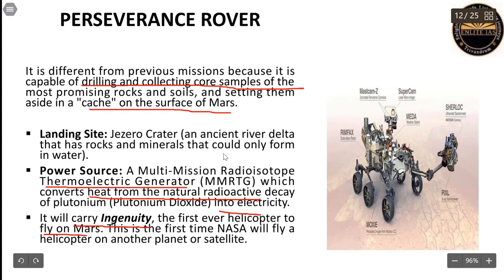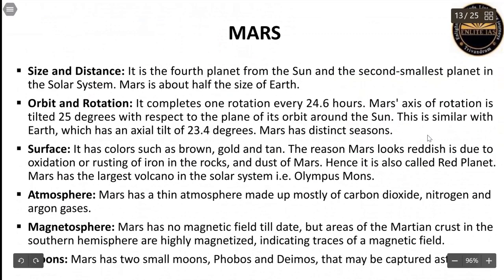In this diagram you can see the different instruments carried by the Perseverance Rover and what each instrument performs. Some details about Mars are briefly mentioned here — if a question is asked in the exam regarding Mars in the mains, you can use certain facts from this section.